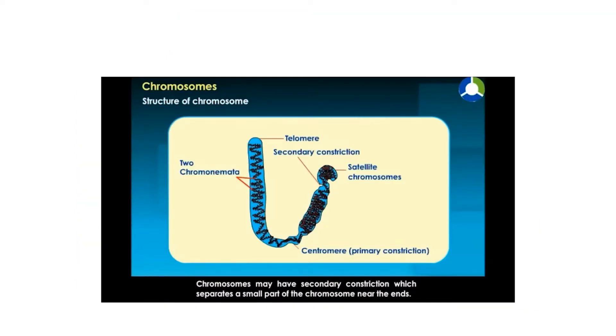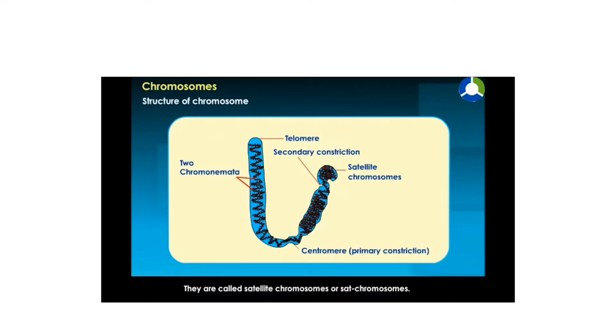Chromosomes may have a secondary constriction which separates a small part of the chromosome near the ends, and they are called satellite chromosomes or SAT chromosomes.